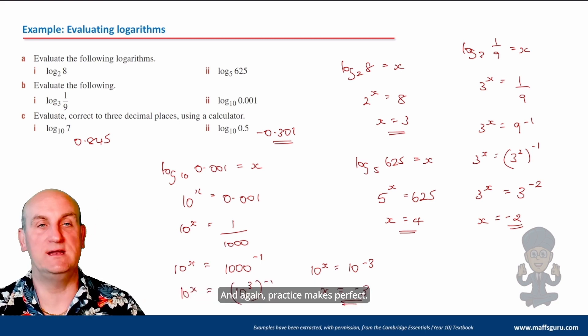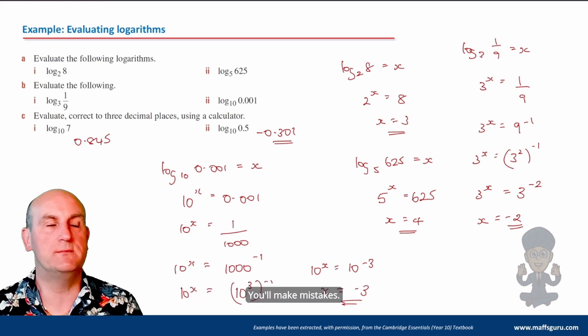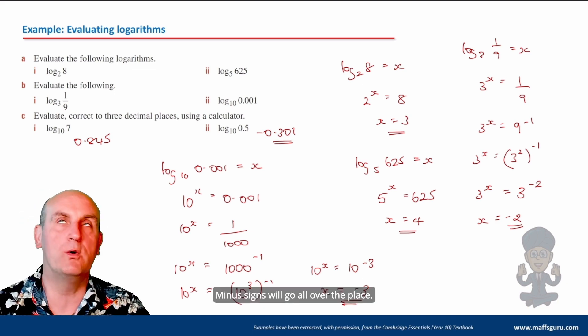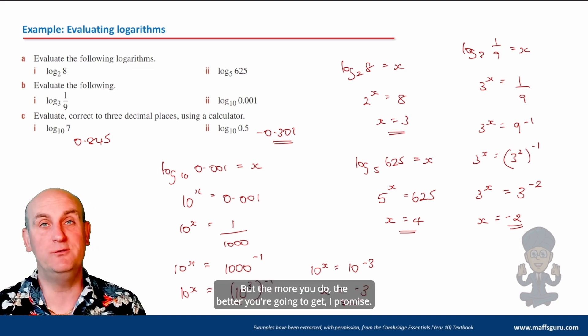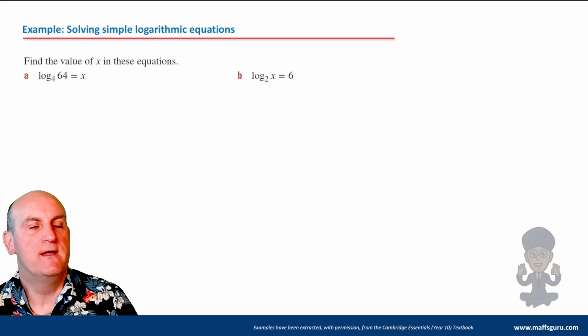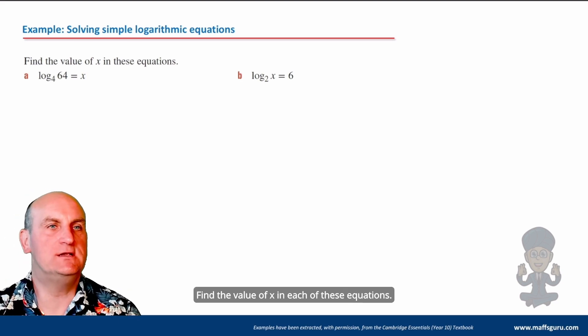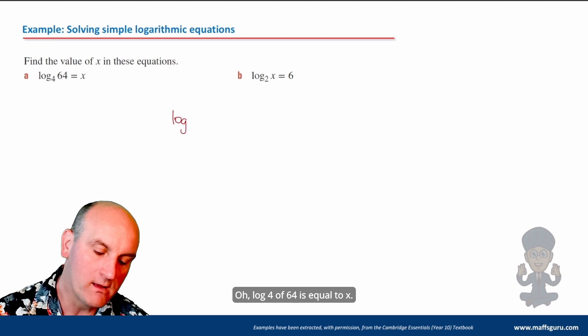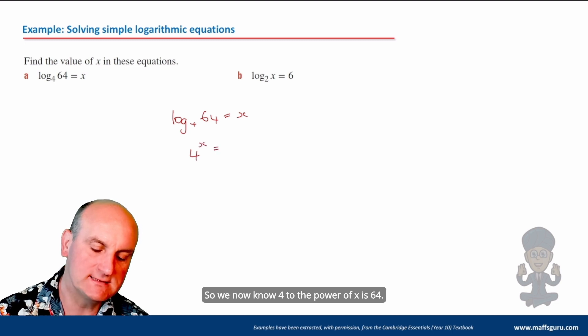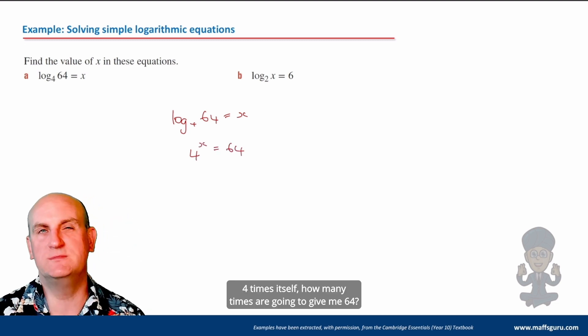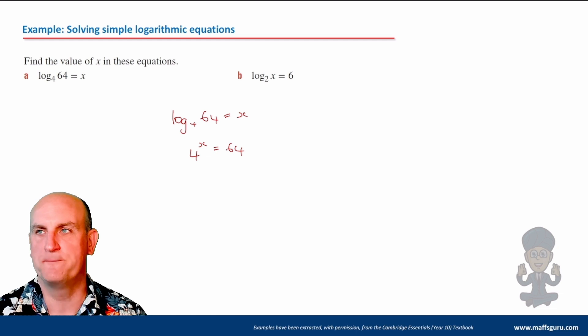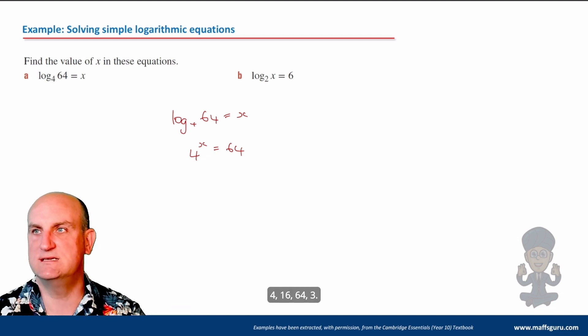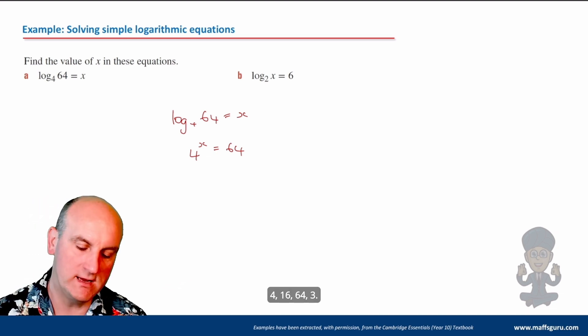That's giving you a general indication of how to do this using the calculator and whatever else. And again, practice makes perfect. It's algebra. I get it. You'll make mistakes. I get it. Minus signs will go all over the place. I get it. But the more you do, the better you're going to get, I promise. Find the value of x in each of these equations. Log 4 of 64 is equal to x. So we now know 4 to the power of x is 64. 4 times itself, how many times are you going to give me 64? 4, 16, 64, 3.